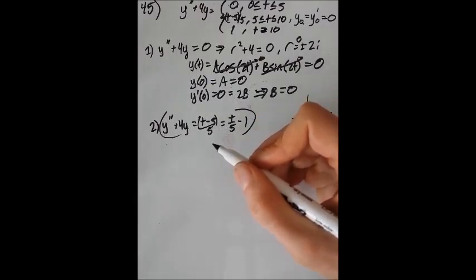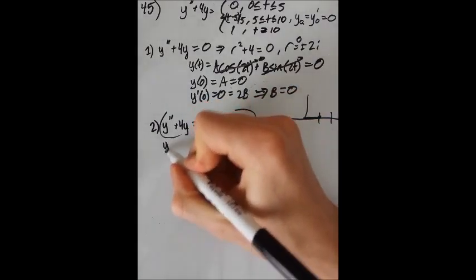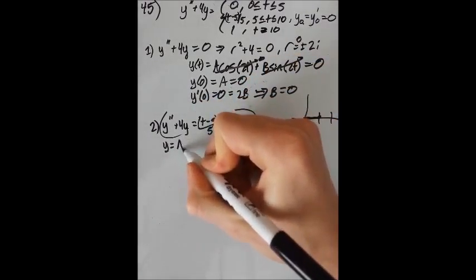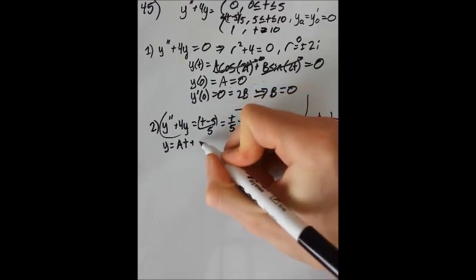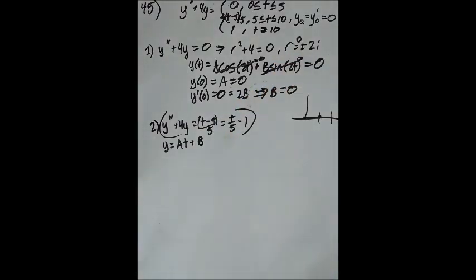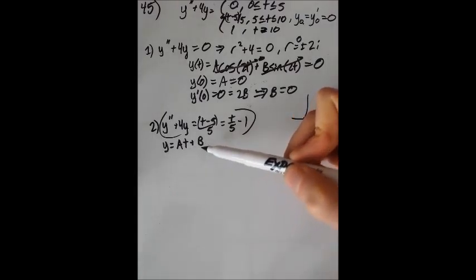So we're just going to assume that our solution is y equals, let's just call it, a times t plus b. Second order polynomial. Or our first order. And then the zero order is here.